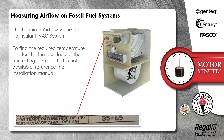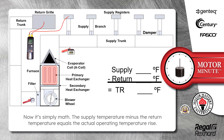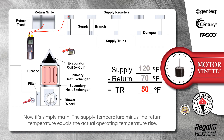To find the required temperature rise for the furnace, look at the unit rating plate. If that is not available, reference the installation manual. Now it's simply math: the supply temperature minus the return temperature equals the actual operating temperature rise.